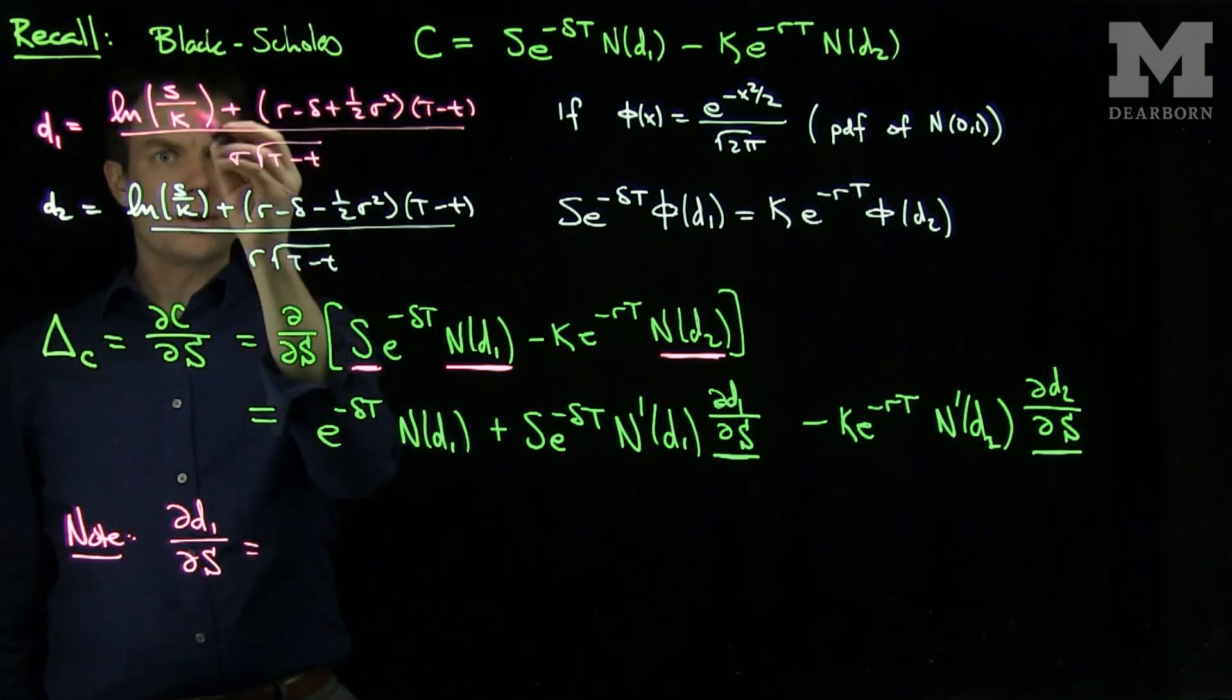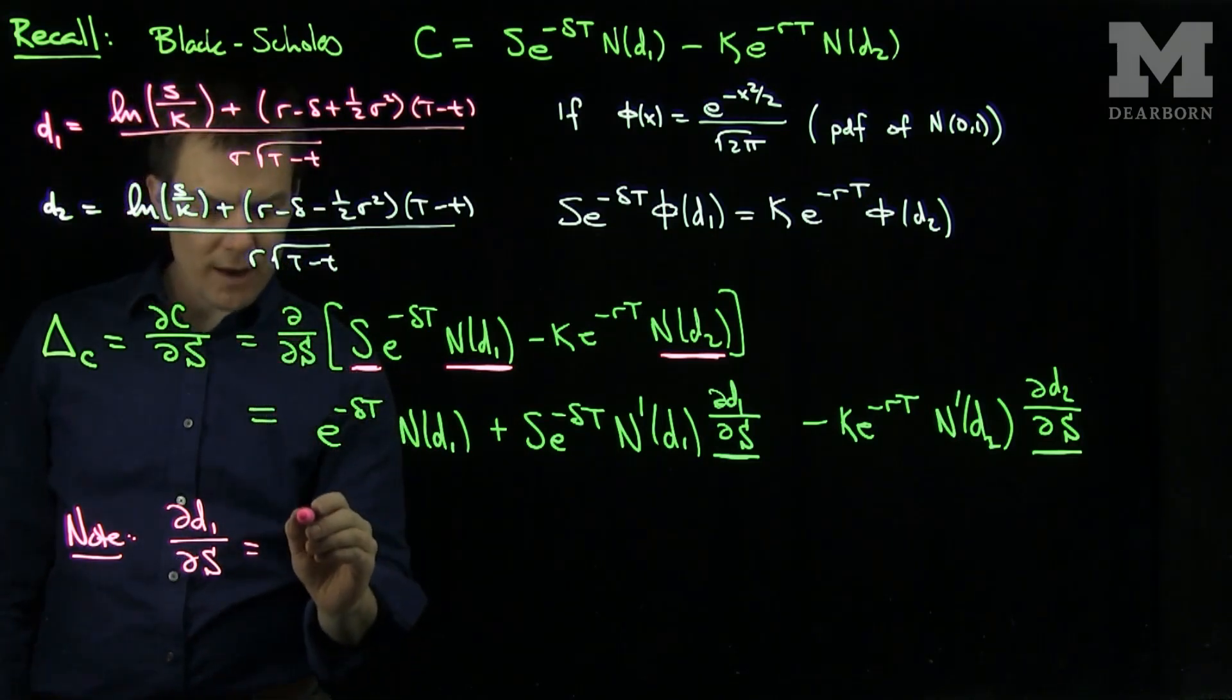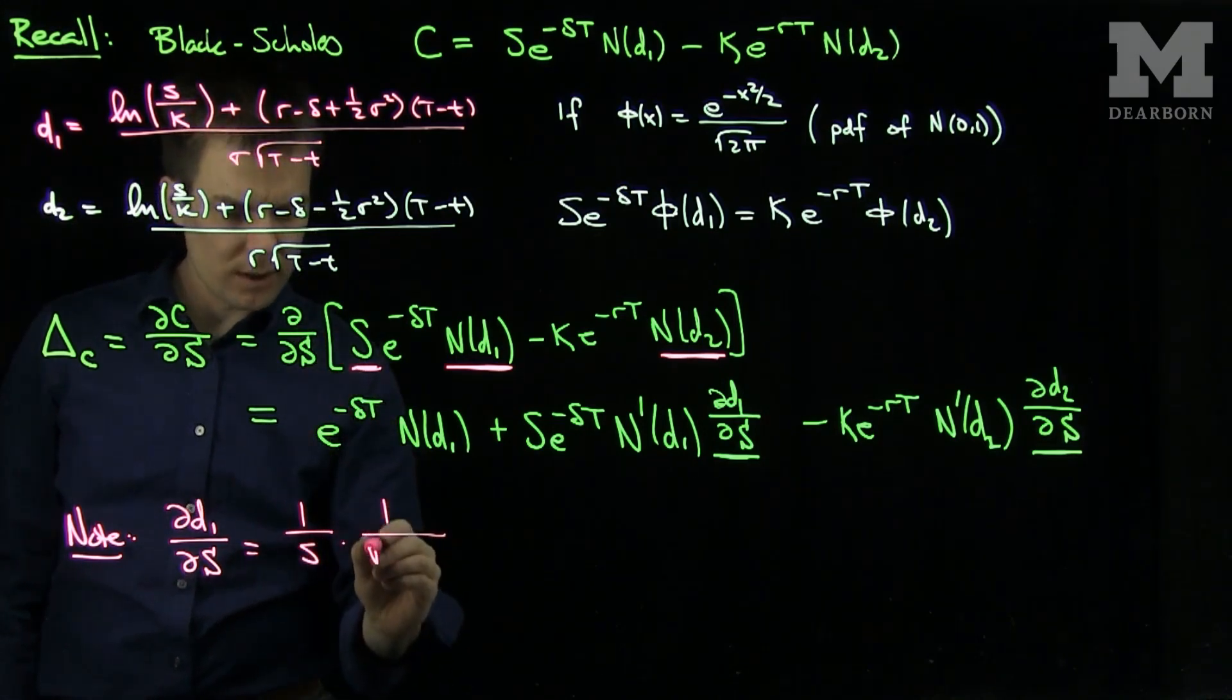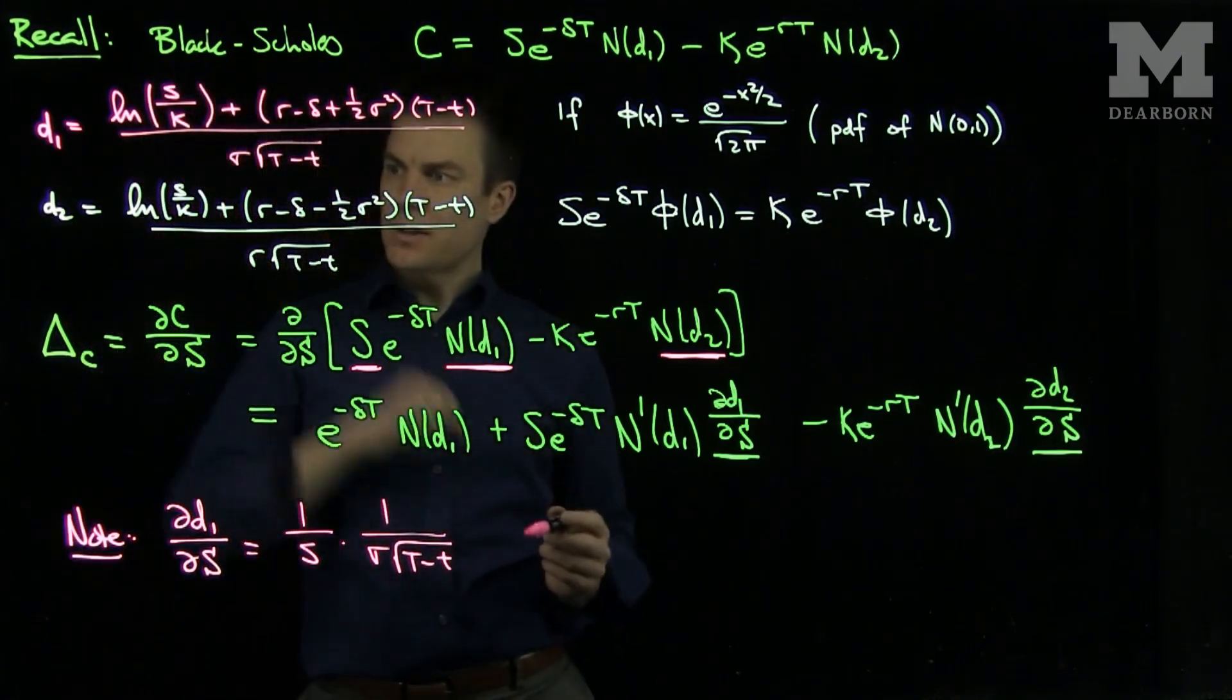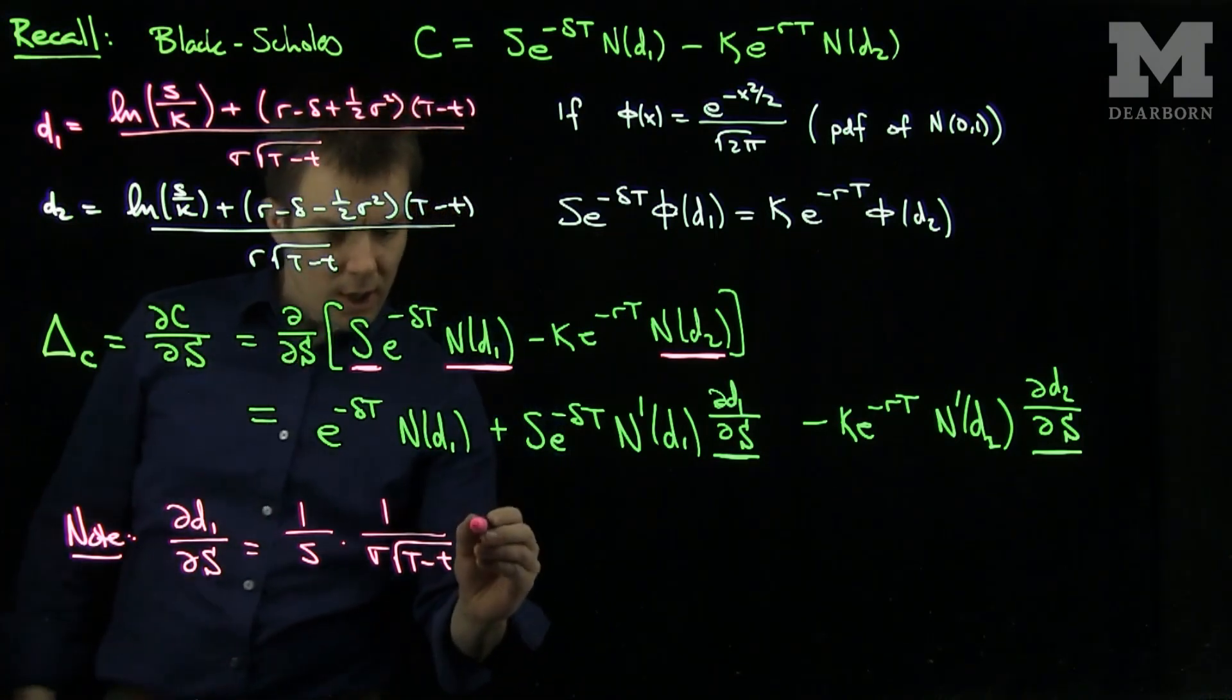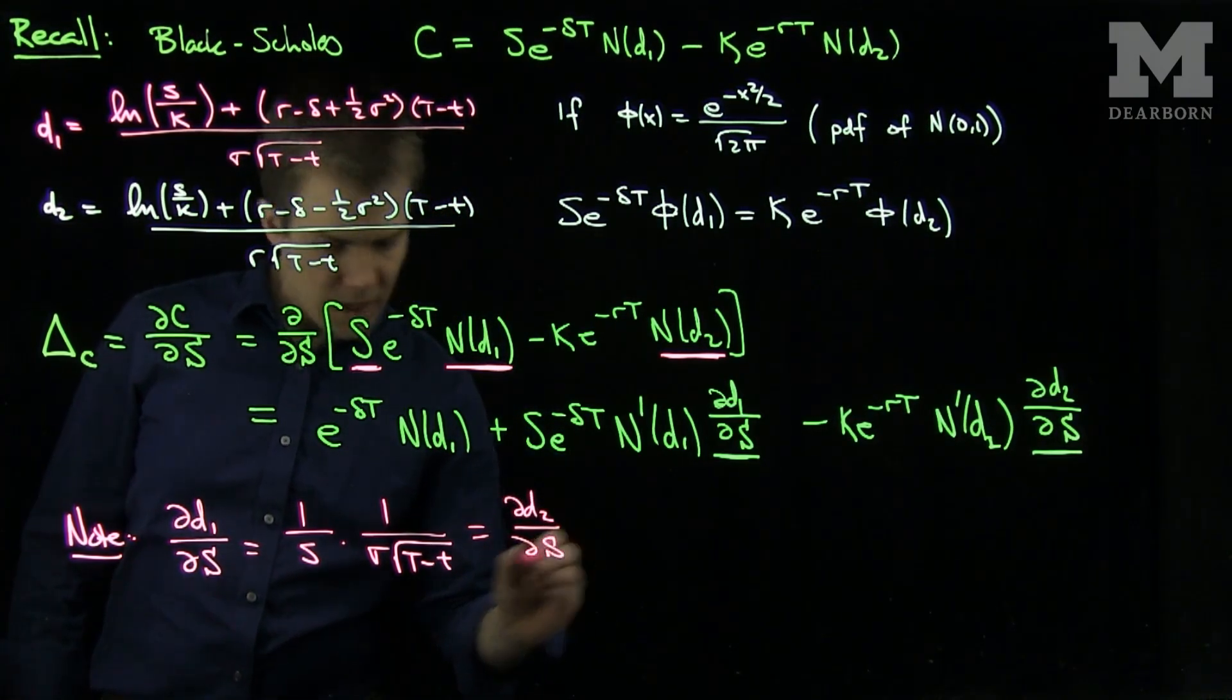So if we simplify this, I'll have a log of s, and if I look at d2, the only difference between d1 and d2 is this negative sign over here where there's no s's. So we see that this is also partial d2 partial s. So this relationship is extremely useful.